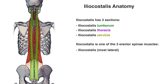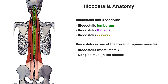Our next erector spinae muscle is the longissimus muscle, highlighted here in green again, just medial to the iliocostalis. And lastly we have the spinalis muscle, which is the most medial of the erector spinae muscle group. Each of the erector spinae muscles has their own individual three sections, just like the iliocostalis which we looked at at the start of this video.